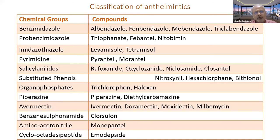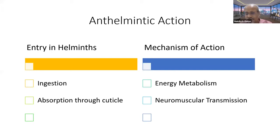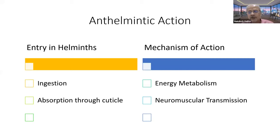Let us talk about anthelmintic action. Once the anthelmintic is administered in the body of the infected animal, how does it enter the body of the worm? There are only two ways: one is by ingestion, which is possible with nematodes and flukes, and the other is absorption through the cuticle, which mainly happens in tapeworms.